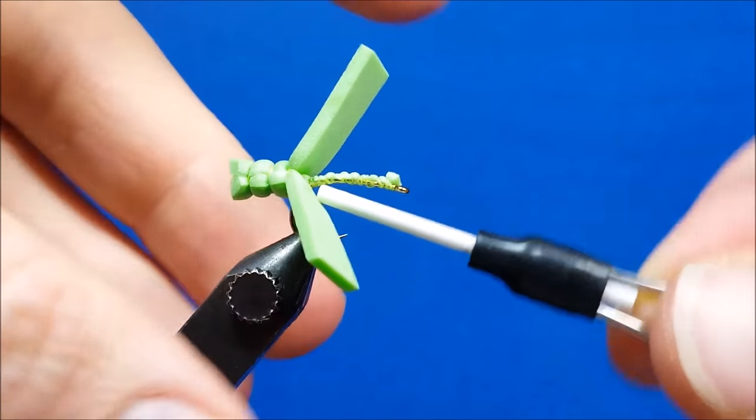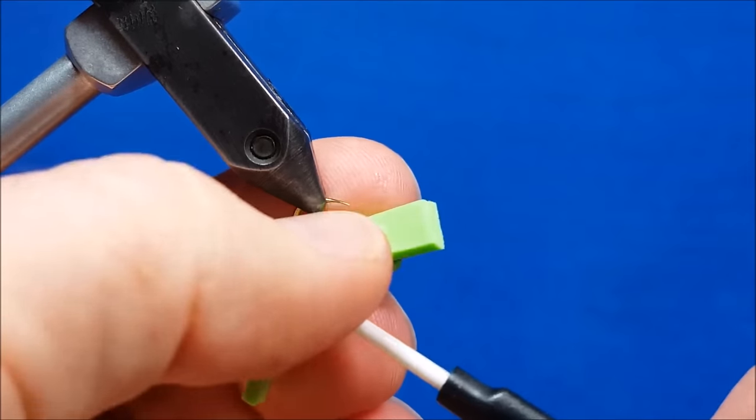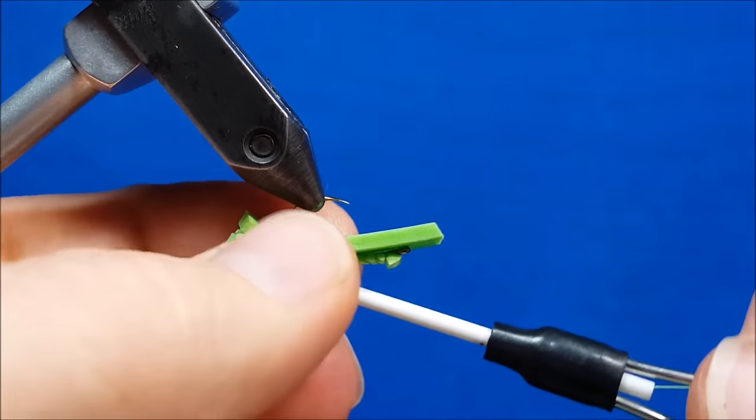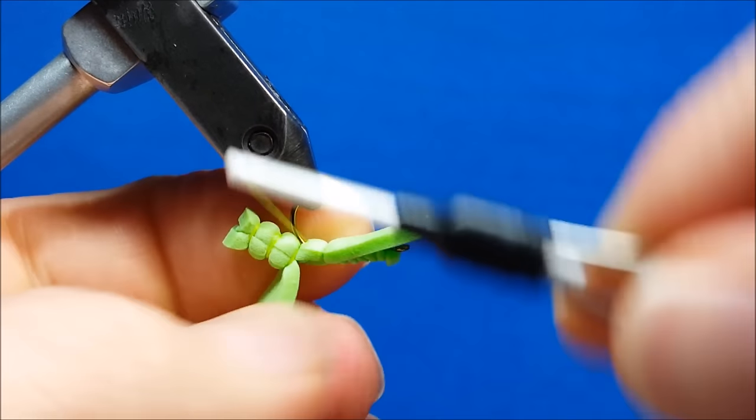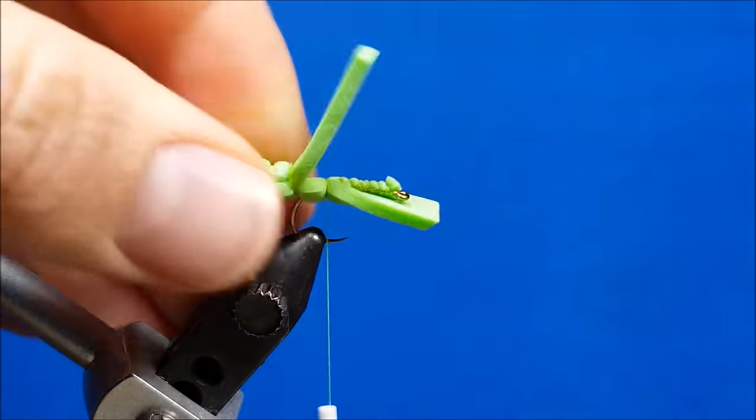All I'm going to do now is start to repeat this segment creation process. I want to start right here, nose is right there in that little crevice, and I'll rotate it upside down. I'm going to create another segment right underneath there. Same idea, cinch and pinch, three or four wraps.